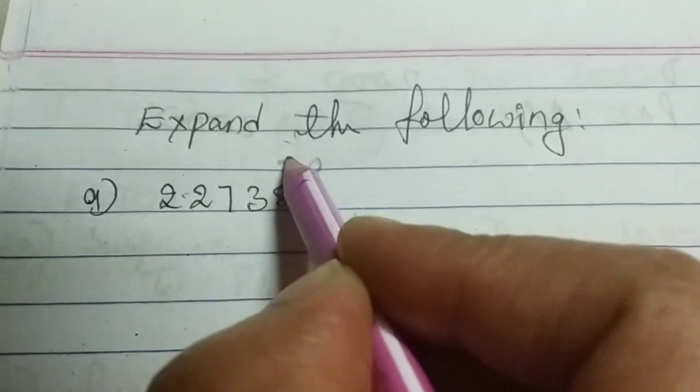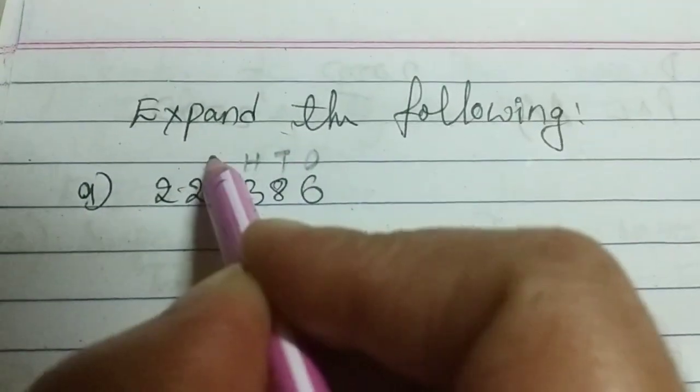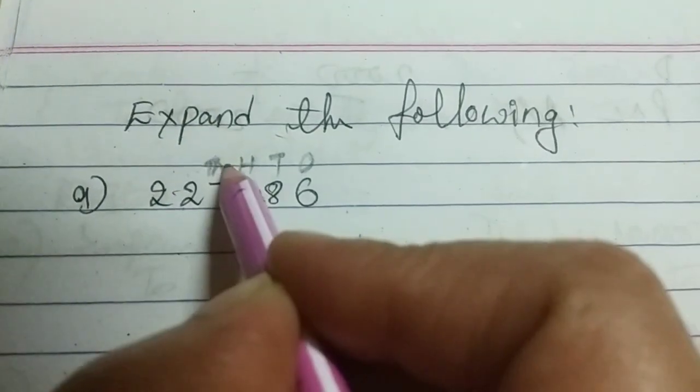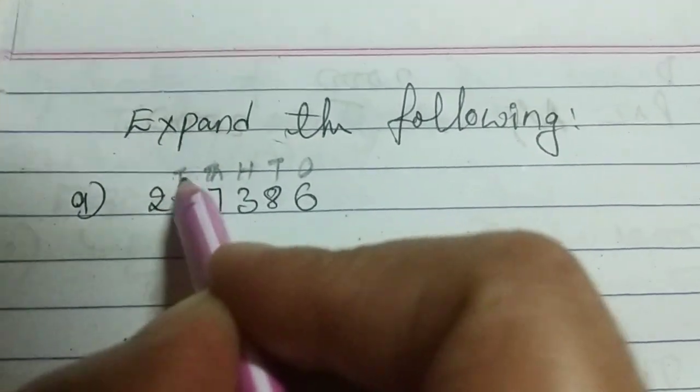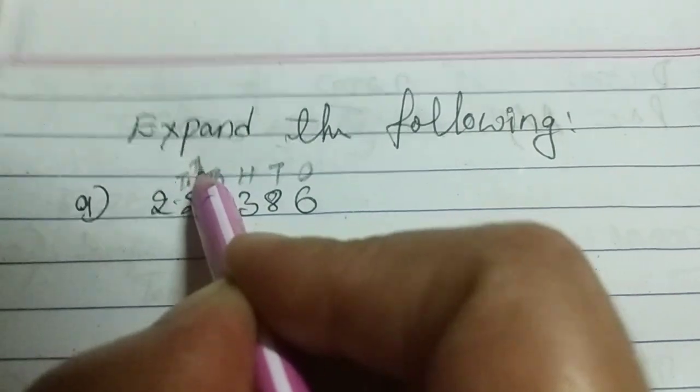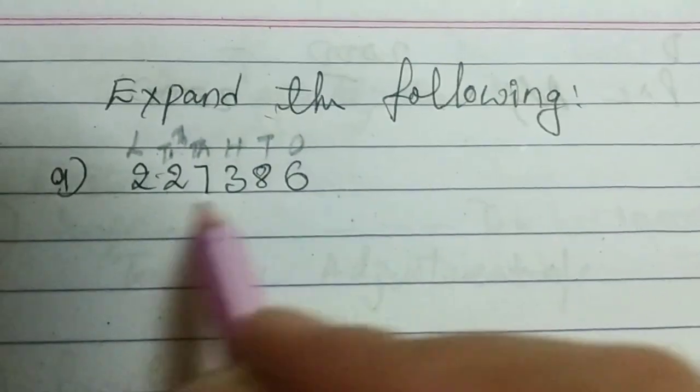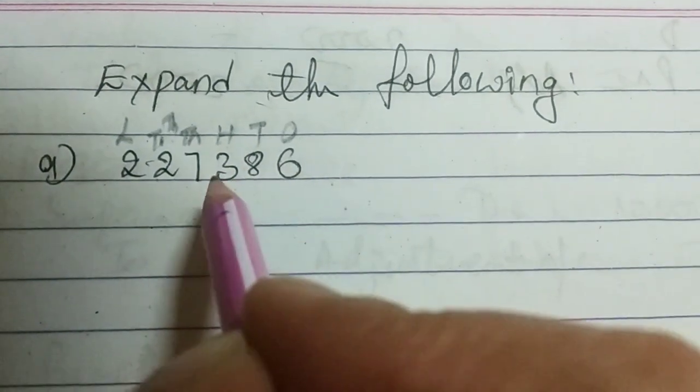Ones, tens, hundreds, ten thousand. Next, thousands. Sorry, thousands. Ten thousands and lakh. So, according to these columns, you should give the periods.